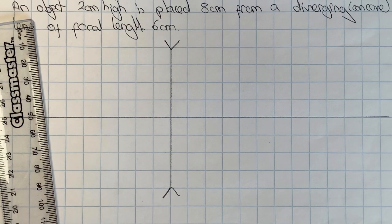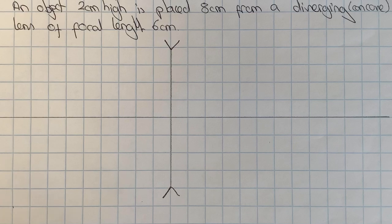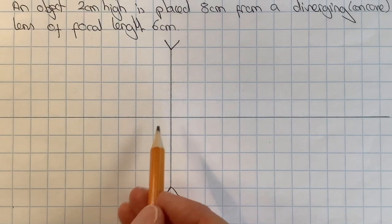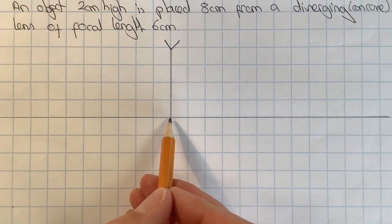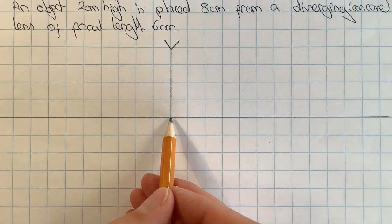Having drawn that in, I can then mark in the focal length which is described as six centimeters. On a converging lens we saw that you marked the focal length on the opposite side of the lens to the object. For a diverging or concave lens you're going to mark it on the same side of the lens as the object.